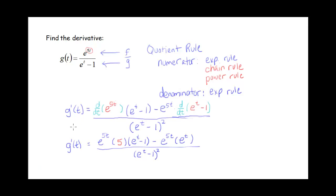Welcome back. Hopefully you gave this a try. When I'm using the quotient rule, I take the derivative of the numerator times the denominator, minus the numerator times the derivative of the denominator. When I take the derivative of my numerator — the derivative of e to the 5t — I just get e to the 5t, but I have to multiply by the derivative of this 5t, and that's where that 5 comes from. Then when I take the derivative of my denominator, the derivative of e to the t gives me e to the t, and the derivative of 1 just gives me 0.